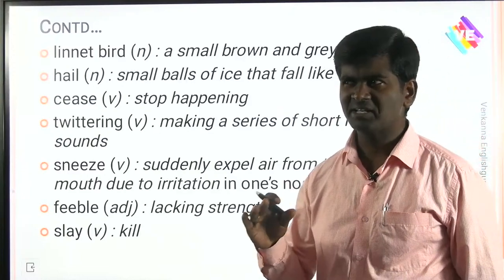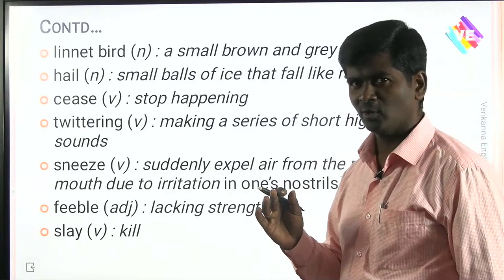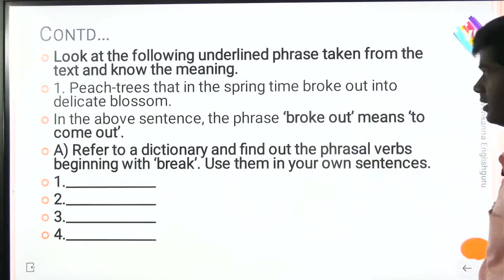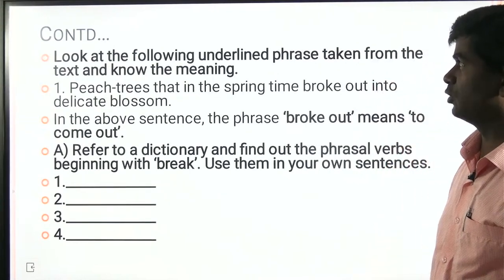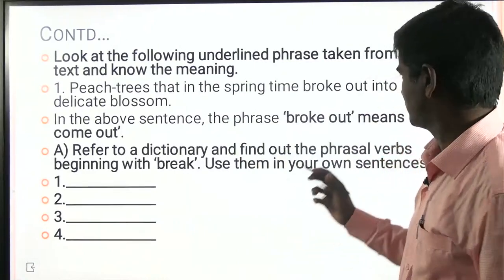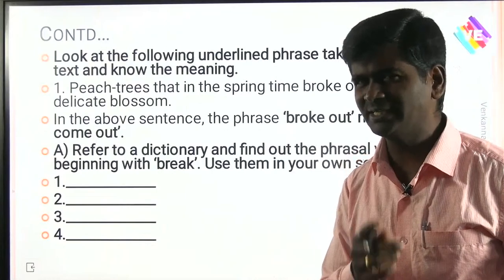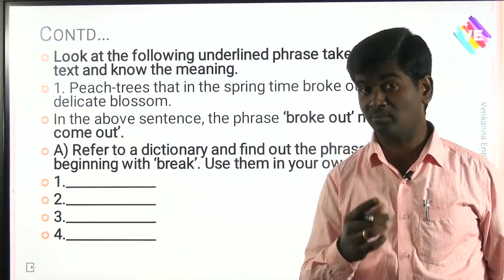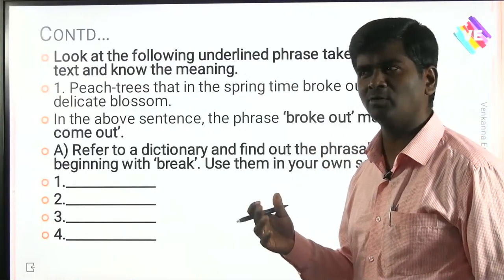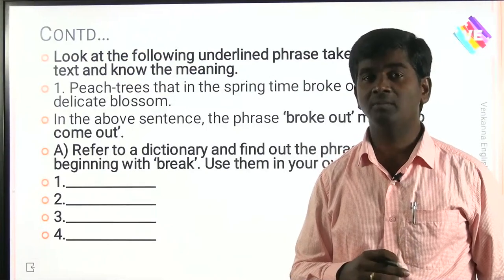The queen wanted to slay the supreme commander because he did not support her. Now look at the phrasal verb 'broke out' — it means to come out suddenly. For example, the truth was hidden by conspirators but it broke out suddenly ten months ago and destroyed families. Refer to your dictionary and find phrasal verbs beginning with 'break': break off, broke out, break down, break into, break for.